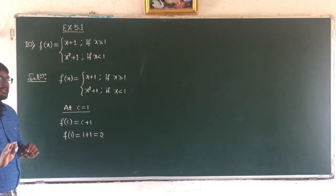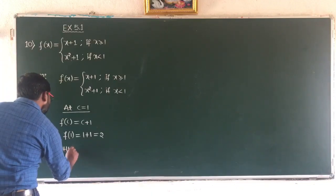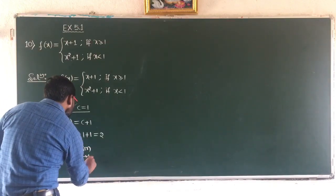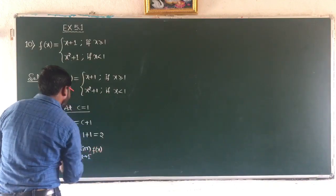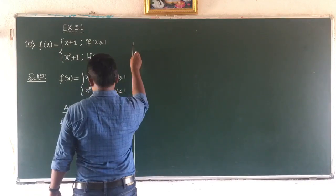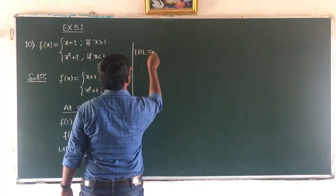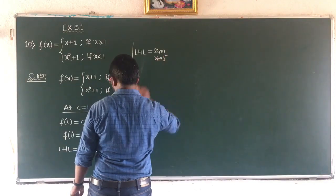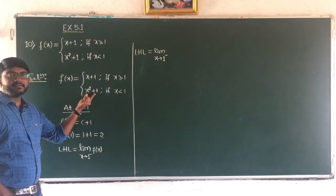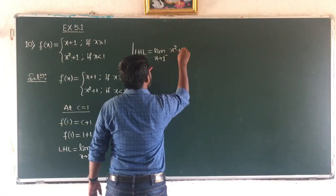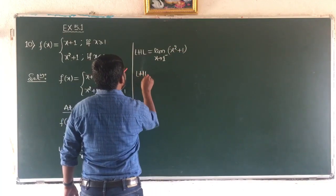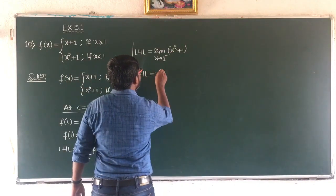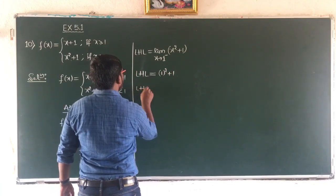Next we go for LHL and RHL. LHL equals limit as x tends to 1 minus of f(x). Since 1 minus means less than 1, the function is x square plus 1. Applying the limit, 1 square plus 1 gives LHL equal to 2.